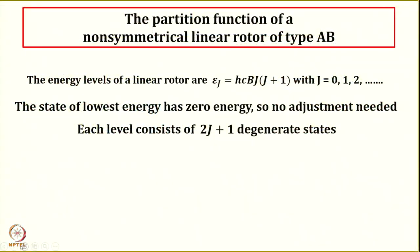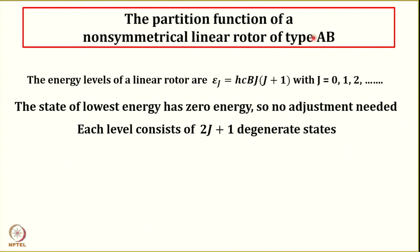What I mean is that the molecule can be linear — for example, diatomic means it will be linear. If it is triatomic, it may be linear or it may be non-linear. Examples: carbon dioxide or water represent linear and non-linear rotors. In this lecture we are going to discuss first the rotational contribution to the molecular partition function specifically for a linear rotor — first the non-symmetrical linear rotor, meaning molecules of type AB such as HCl, HBr, and carbon monoxide.